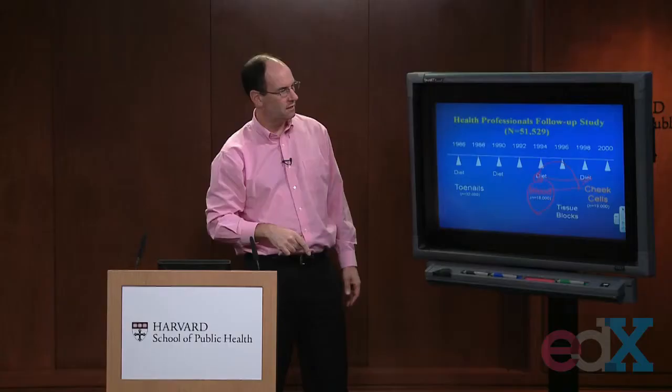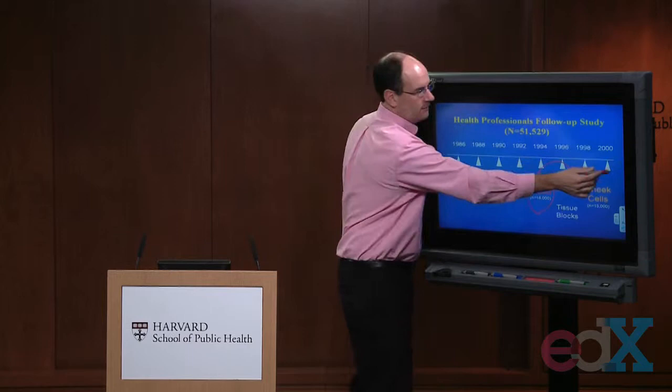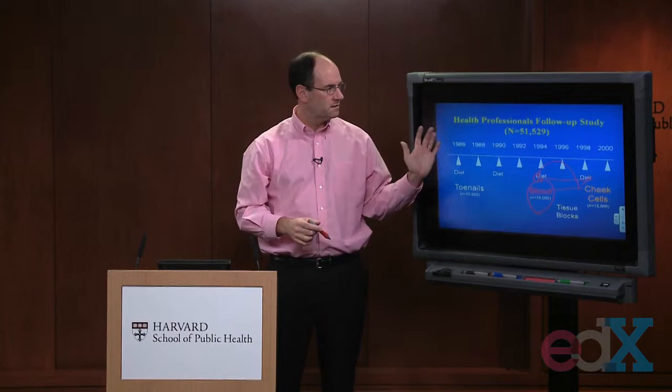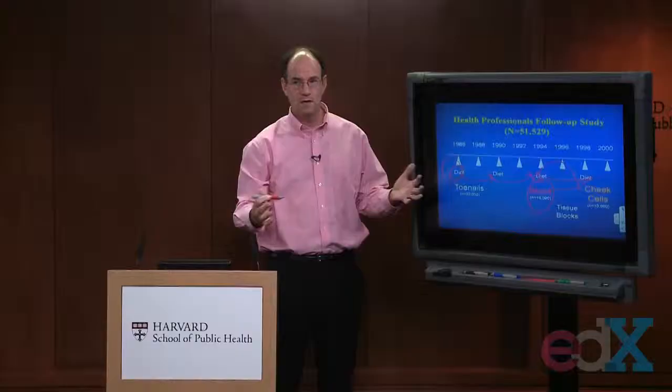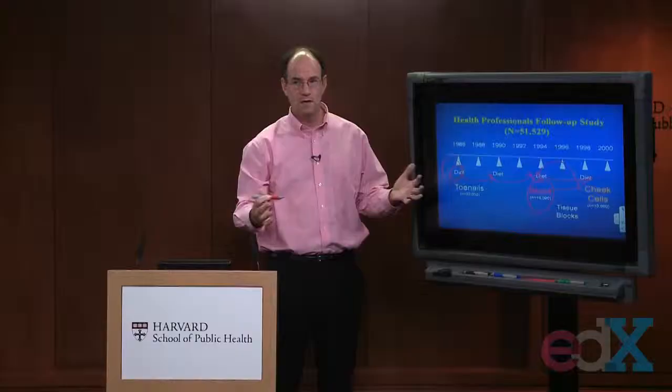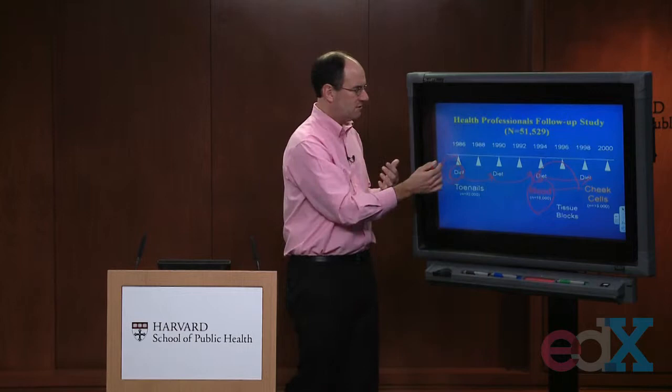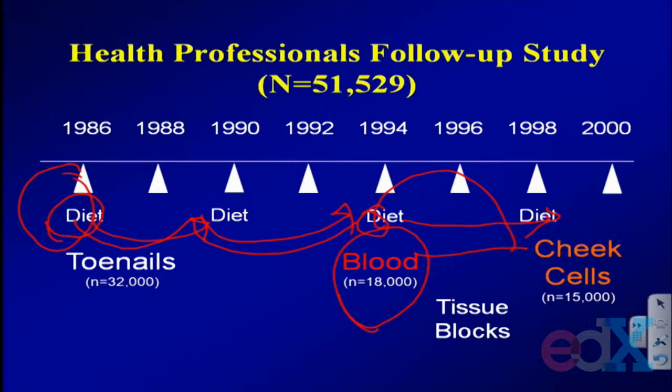The study continues — every two years we mail questionnaires to document new incident diseases. One unique aspect of the Nurses' Health Study and the Health Professionals Follow-Up Study is that we go back every four years to measure diet. Most prospective cohort studies looking at diet and chronic disease have a single baseline measure, which is valuable, but after 15 or 20 years people's diets change and the food supply changes. This allows us to look at changes over time and how they may impact chronic disease.